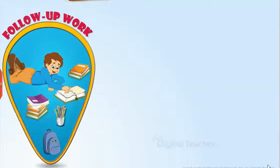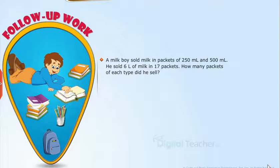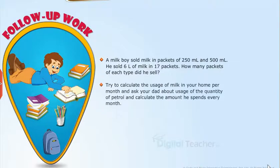Follow-up word problem. A milk boy sold milk in packets of 250 ml and 500 ml. He sold 6 liters of milk in 17 packets. How many packets of each type did he sell? Try to calculate the usage of milk in your home per month, and ask your dad about the quantity of petrol used and calculate the amount he spends every month.